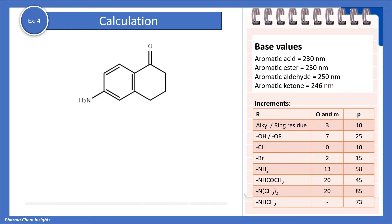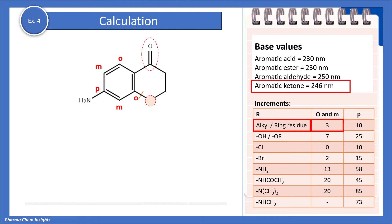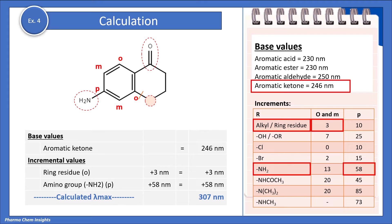Example 4: here we have an aromatic ketone and the base value for that is 246 nm. We have a ring residue at the ortho position; the incremental value for that is 3 nm. We also have an amino group at the para position with an incremental value of 58 nm. Calculating these, the lambda max or absorption maxima for this compound is 307 nm.